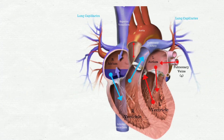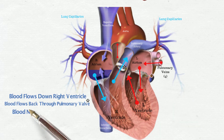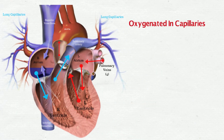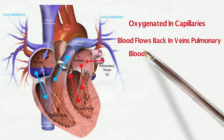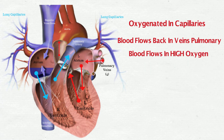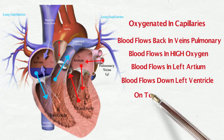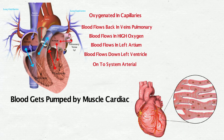Blood flows in from the venous system, blood flows down right ventricle, blood flows back through pulmonary valve. Blood now in pulmonary artery, blood flows through lung capillaries, oxygenated in capillary, blood flows back in pulmonary vein. Blood flows in high oxygen, blood flows in left atrium, blood flows down left ventricle, onto the systemic arterial system.